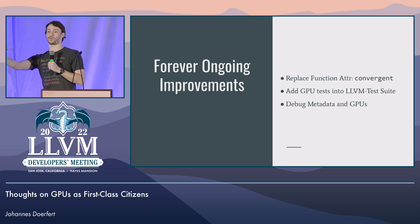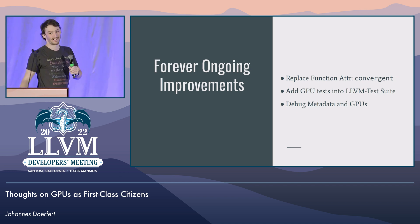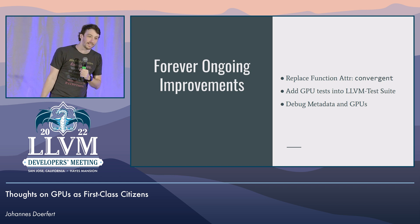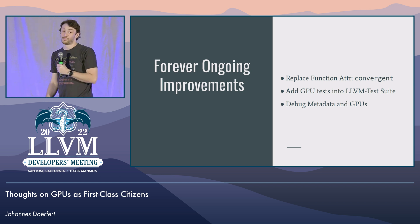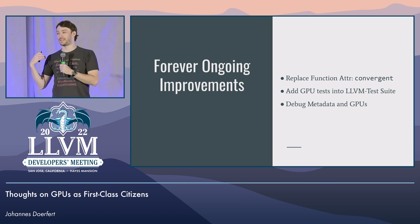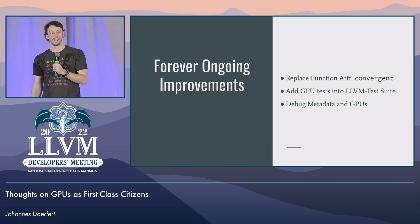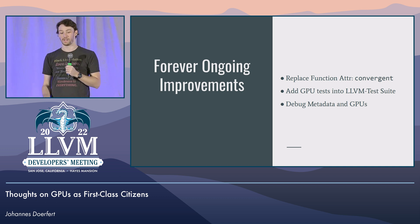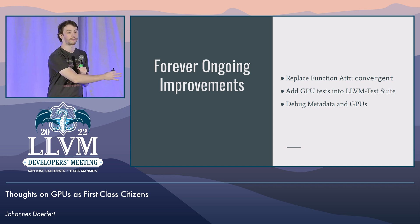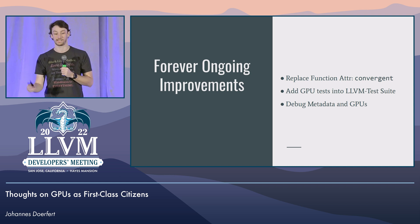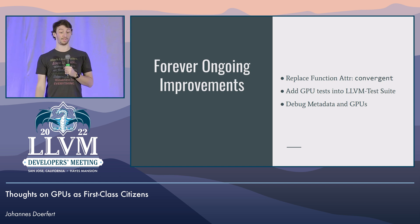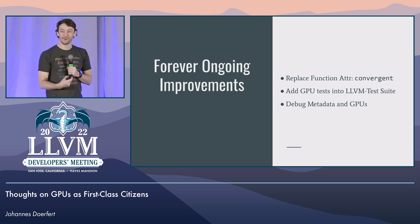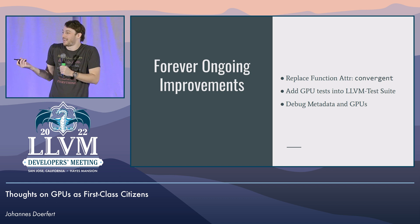There are also these forever-ongoing projects that are kind of happening, but also kind of not. The convergent attribute is conceptually not great and we really should fix that. There have been multiple proposals over the last few years that got stuck — this is one of those things where the community needs to step in and say, let's really do this. We also do not have any GPU tests in the LLVM test suite. All the GPU compilers are based on LLVM, but we don't actually test anything.